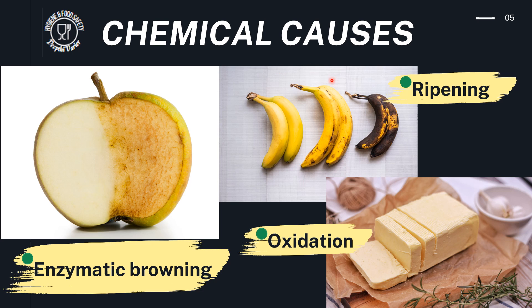The next set of causes are the chemical causes. Chemical causes are due to either enzymes present in the food — so they are intrinsic — or they may be due to chemicals introduced from outside, which are chemical contaminants. Here we are mainly talking about intrinsic chemical causes: chemical reactions happening in the food due to the food's own properties. For example, ripening — bananas ripening faster and faster — is due to the enzymes and hormones present in the food, such as ethylene gas. If you leave food for a long period of time, ripening occurs quickly and ultimately the food gets spoiled.